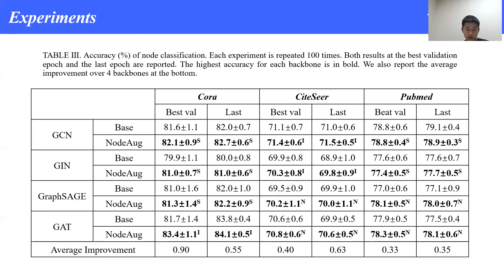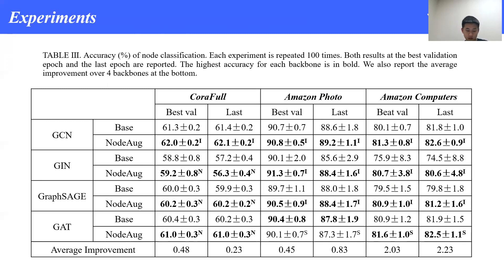We have conducted node classification experiments on well-known graph datasets including Cora, CiteSeer, PubMed, and Amazon, and also apply NodeAug onto GCN, GIN, GraphSage, and GAT. Results of node classification are presented in table 3. This is the second part of table 3. We can see NodeAug enhances performance for almost all GNNs. Notably, on all datasets, GNNs with NodeAug achieve higher accuracy on average.